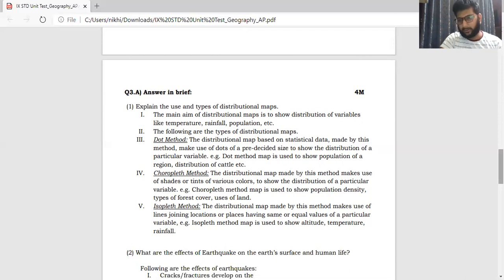The distribution map based on statistical data, count, number, made by this method makes use of dots of pre-decided size to show the distribution of a particular variable. For example, dot method which is used to show the population of a region, distribution of cattle. Remember, all this information has been calculated. And based upon that, the map has been prepared. Next, the choropleth method.